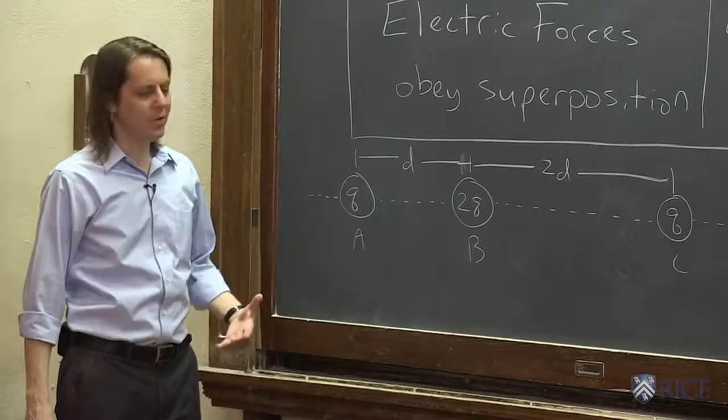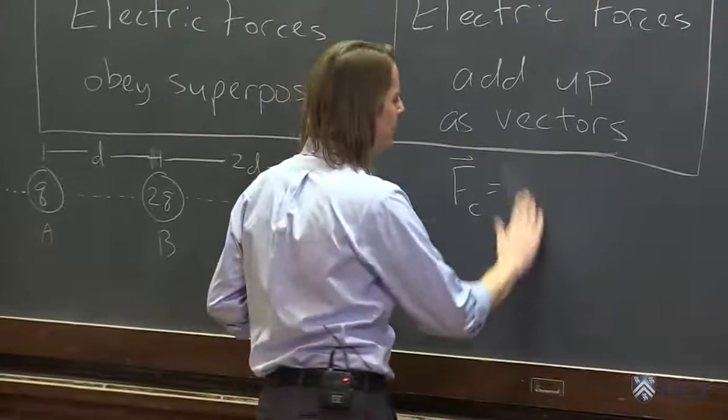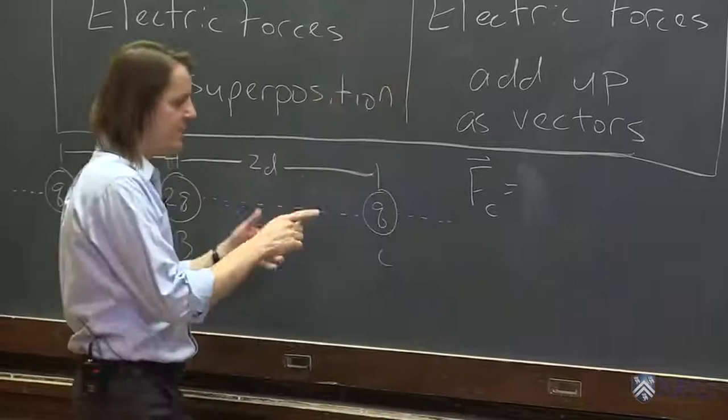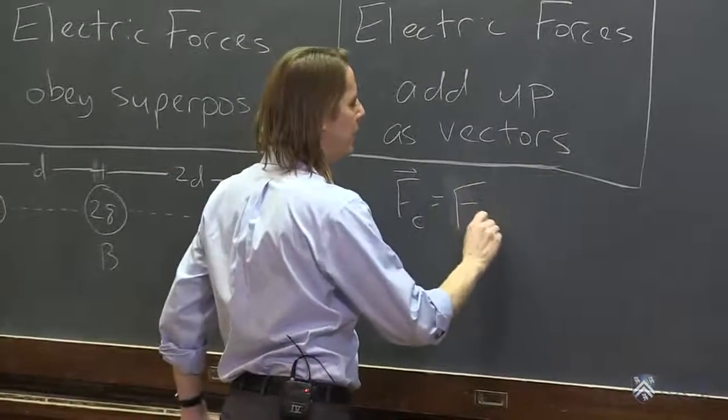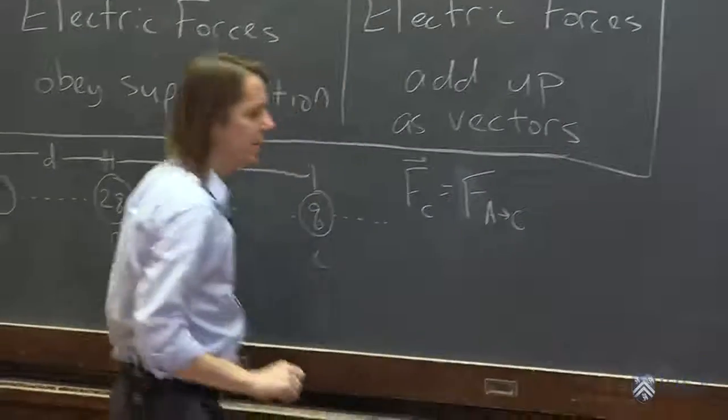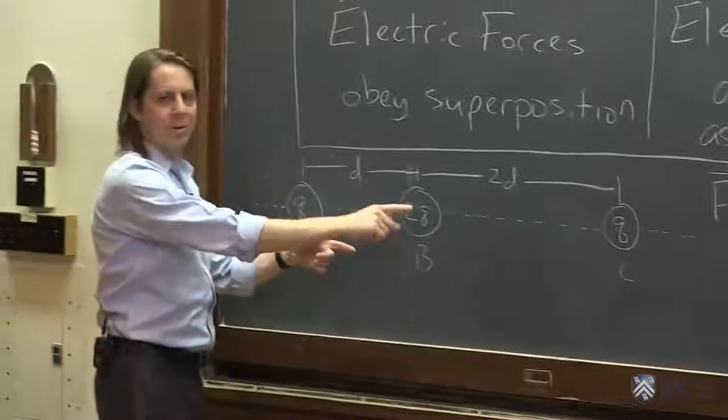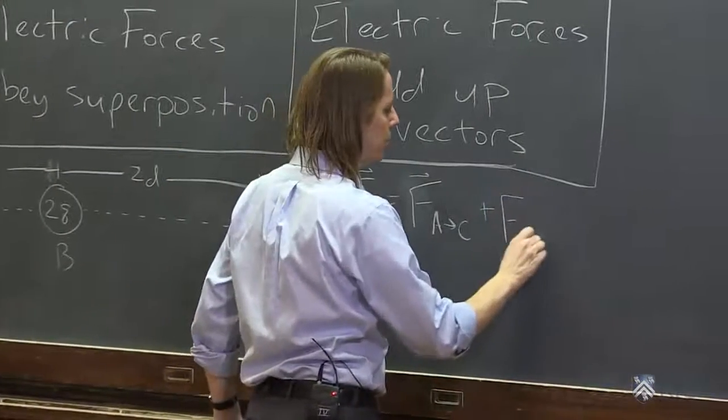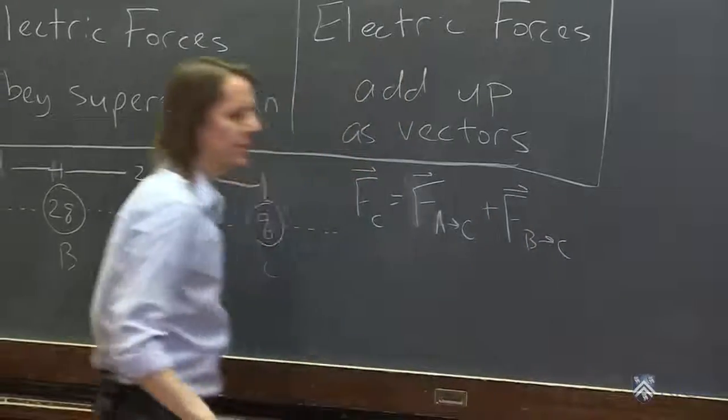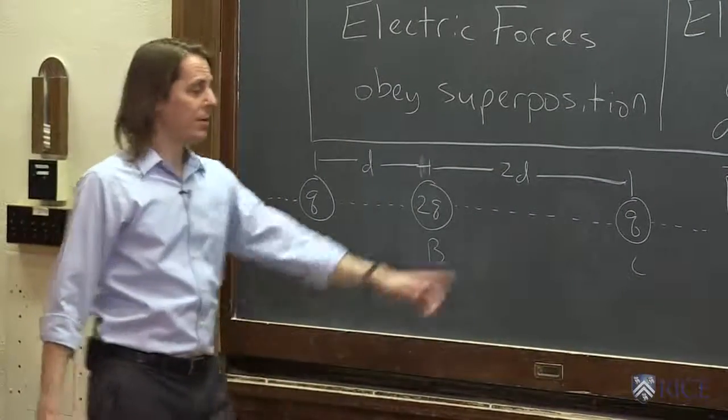So if these obey superposition, we can use a notation like this. We can say the total force on C is the force that A applies to C. So we can call that F A with an arrow to C. That means the force that A applies to C, plus the force that B applies to C. Is that everything? Well, that's everything applied to C.